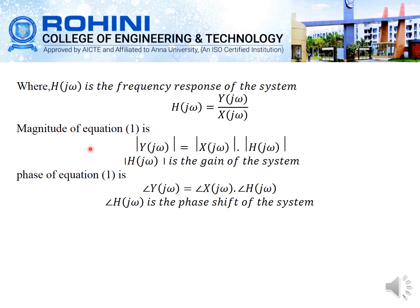The magnitude of the equation gives the modulus of Y(j omega) equal to the modulus of X(j omega) times the modulus of H(j omega), where the modulus of H(j omega) is the gain of the system. The phase angle gives the angle of Y(j omega) equal to the angle of X(j omega) plus the angle of H(j omega), where the angle of H(j omega) is the phase angle of the system.